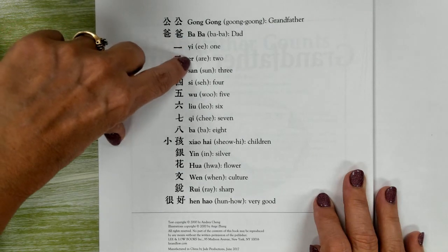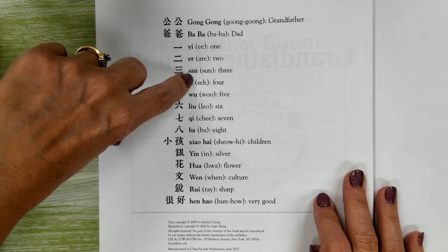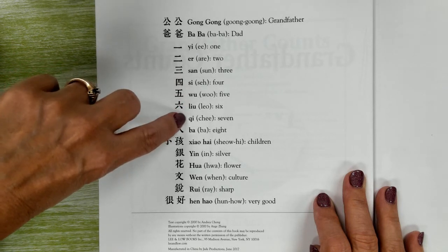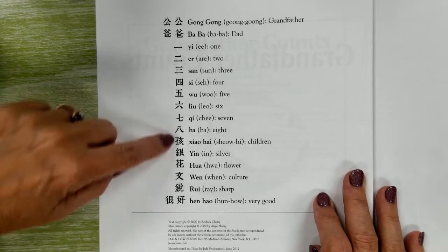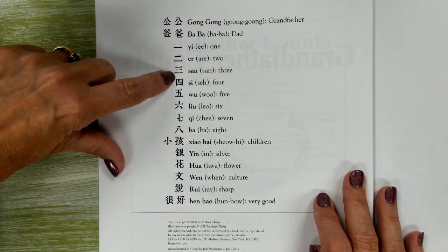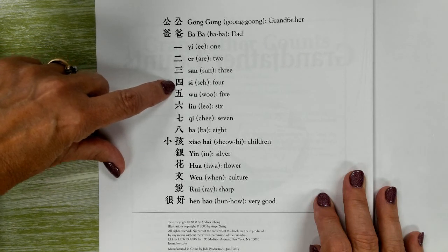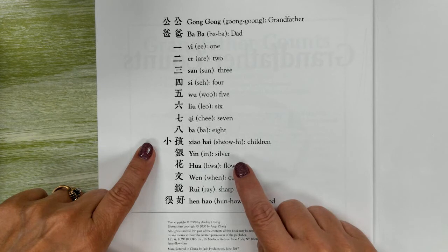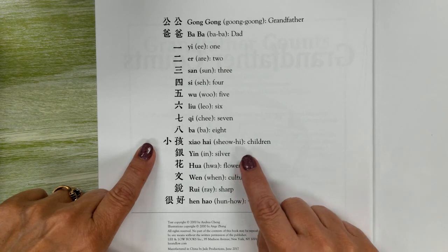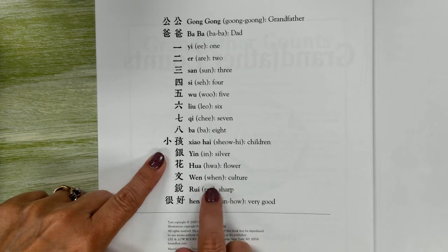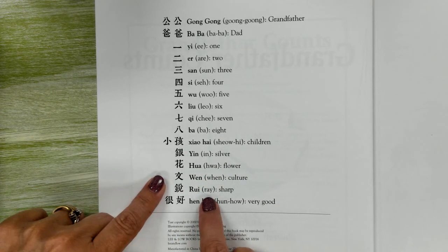It's how you say Xiao Hai (children), Yin (silver), Hua (flower), Wen (culture), Ray (sharp).